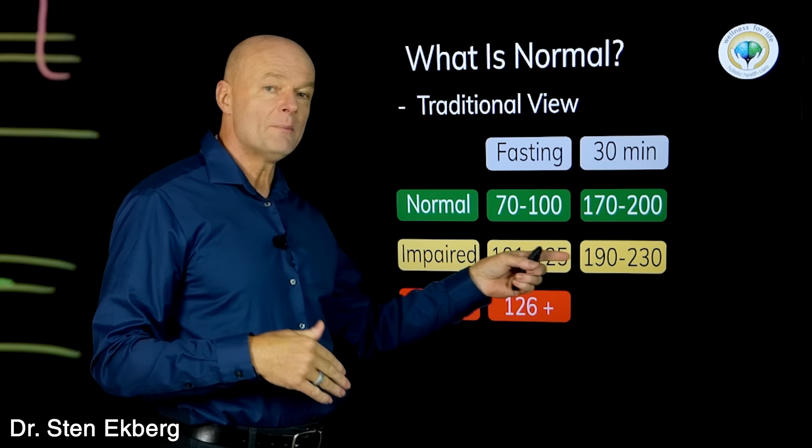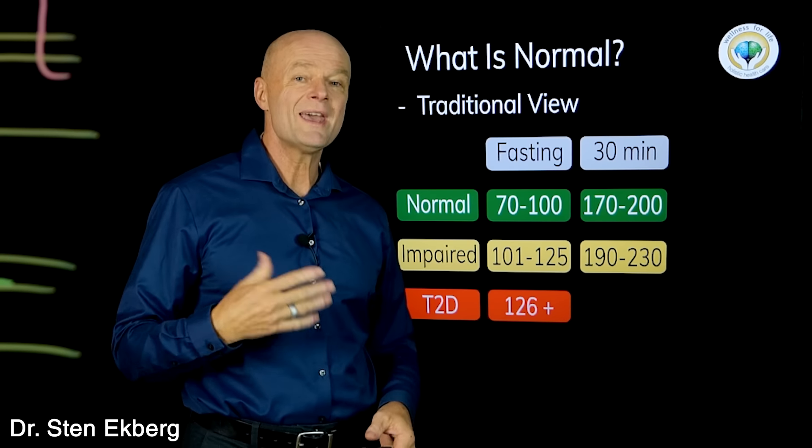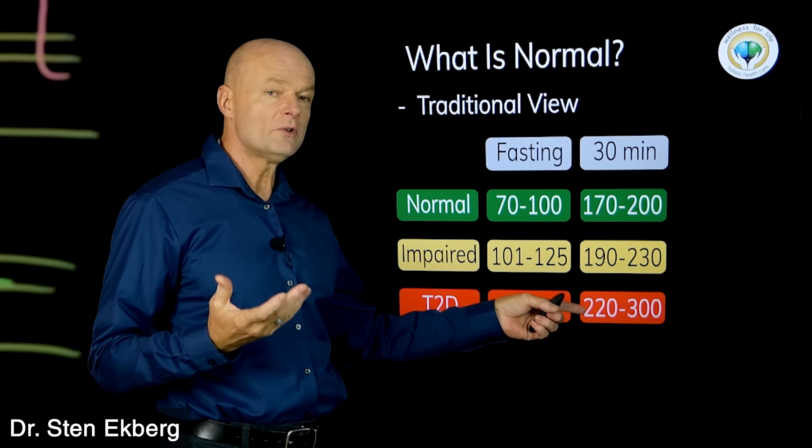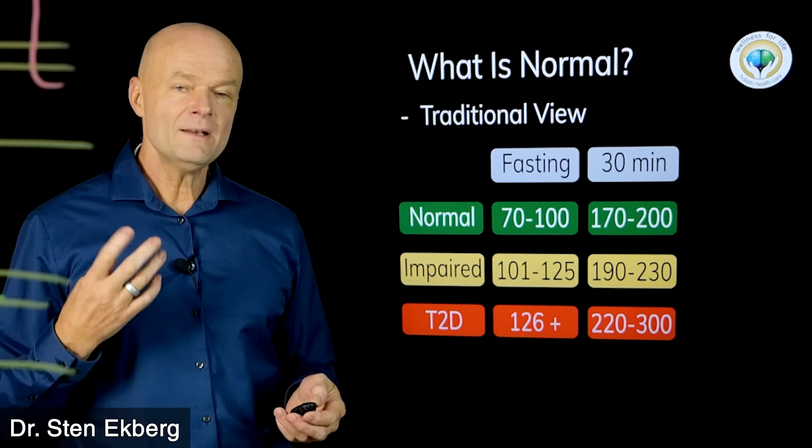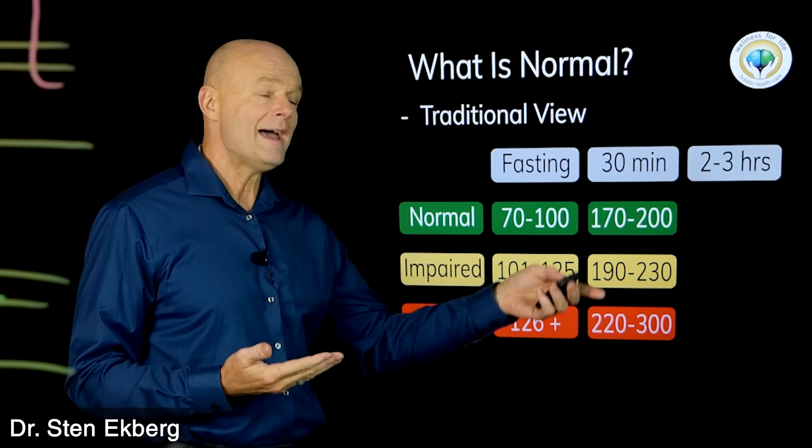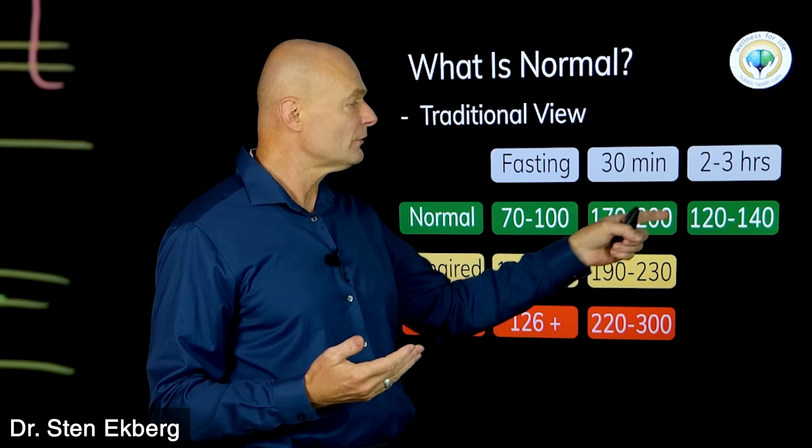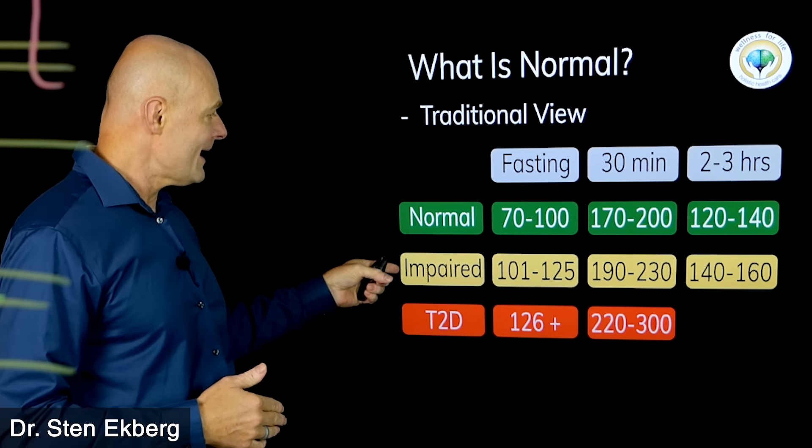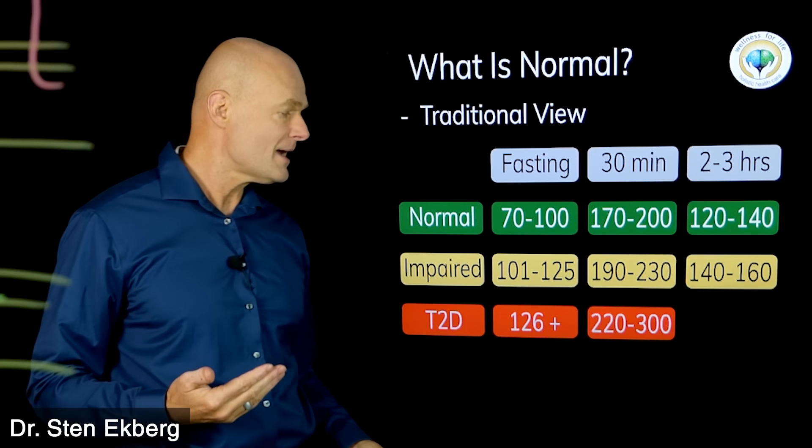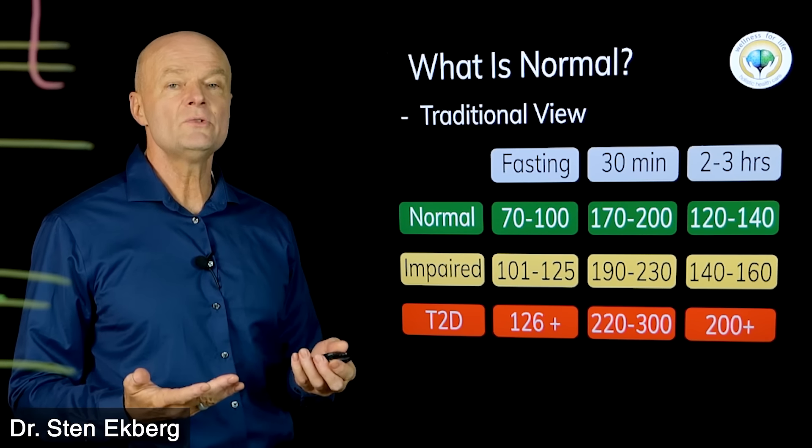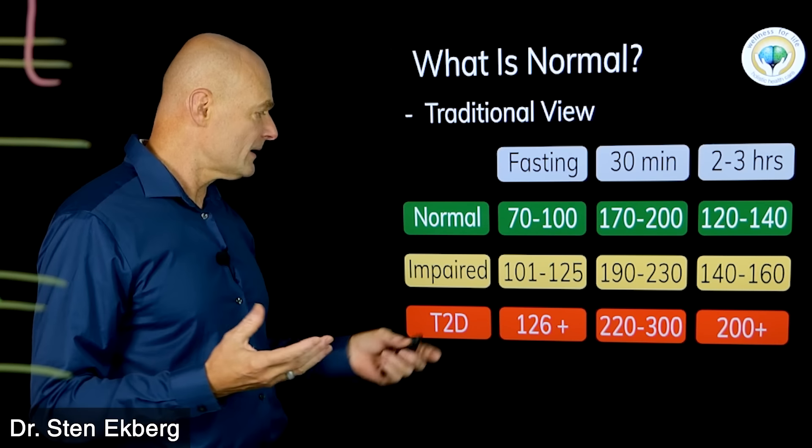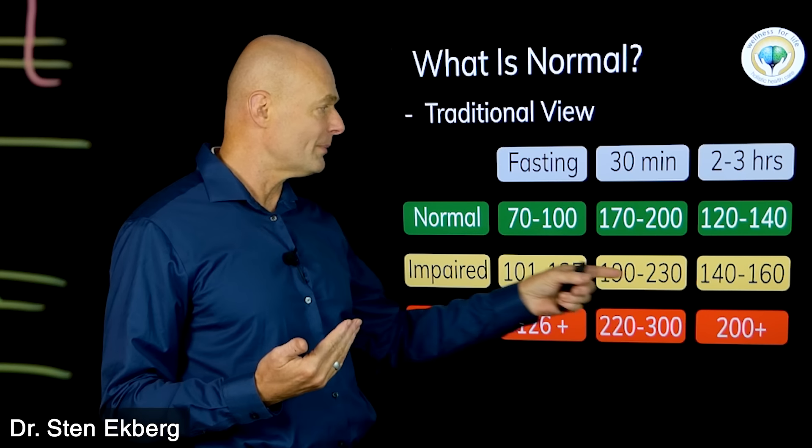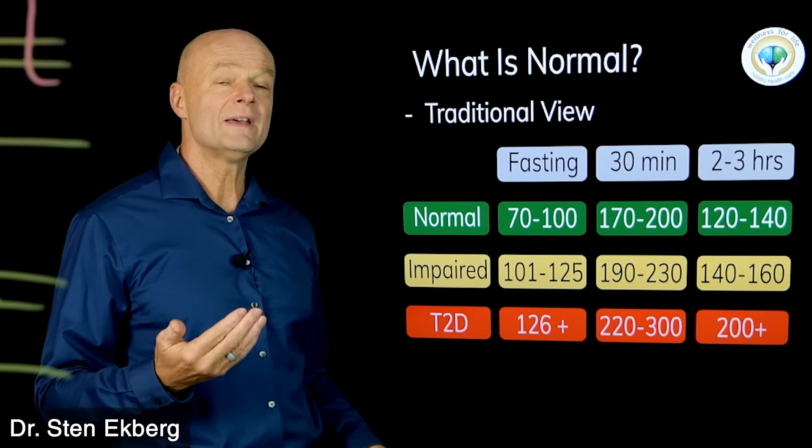However, then they say that 30 minutes after a meal it's normal to have a blood sugar of 170 to 200. No, that's not normal. This is what they consider normal, that's what we've been trained to think by topping off our blood sugar. If you're impaired or pre-diabetic, they say it's okay for it to be 190 to 230. If you're diabetic, 220 to 300 would be expected.